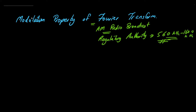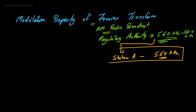In this band, we have specifically a station — let us call this Station A — and this station is operating at 560 kHz. This station owner has bought the spectrum from the regulatory authority, and then this station can transmit its information over the air. So let us visualize a studio environment.